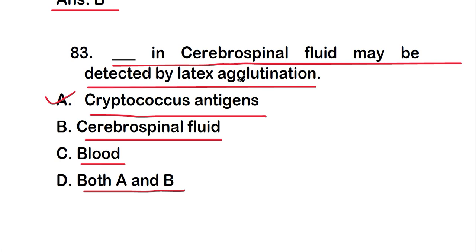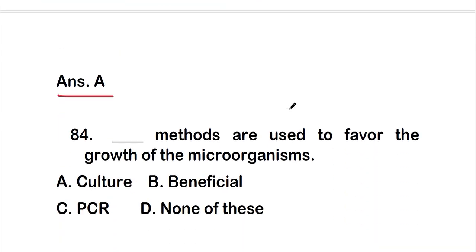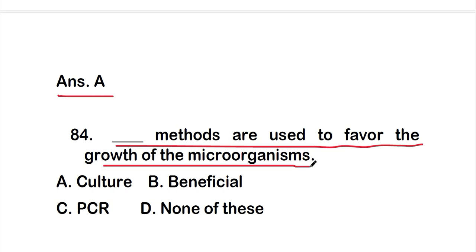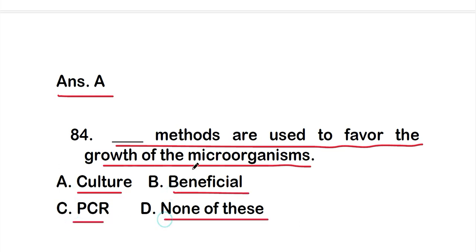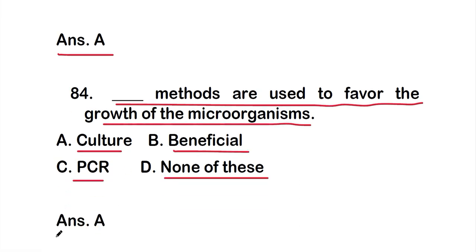Question number 84: blank methods are used to favor the growth of microorganisms. Options are: option A, culture; option B, beneficial; option C, PCR; option D, none of these. The right answer is option A — culture methods are used to favor the growth of microorganisms.